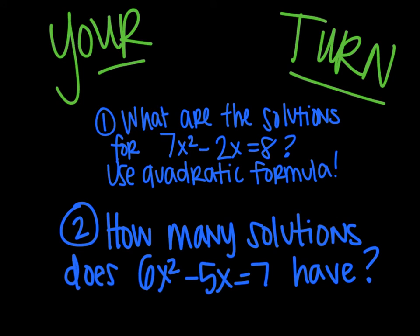Alright, it is time for your turn. Number one, what are the solutions for the equation? Please use the quadratic formula. You can use a calculator also if you would like. And number two, how many solutions does 6x squared minus 5x equals 7 have? Again, you don't need to solve it. I just want to know how many solutions there will be. Go ahead and do this. When you're done, turn your video back on so you can check your answers.